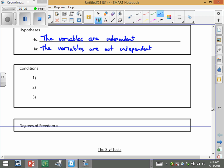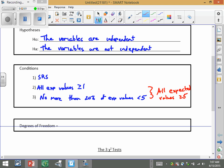The conditions, this is what we're used to: SRS, all expected values greater than or equal to one, and then no more than 20% of expected values at less than five. And again, here's the situation. Chances are you're going to be able to put both those together and say all expected values are greater than or equal to five. That's probably the case.